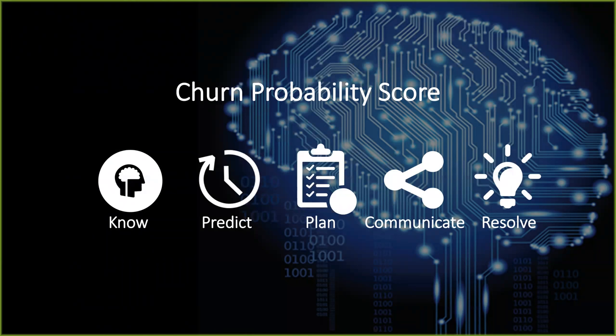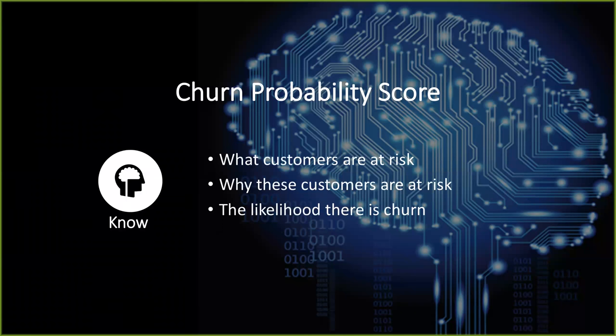The churn probability score has many benefits. The top five I chose to highlight are: the ability to know more about what's happening in your customer base; the ability to predict what's going to happen in terms of recurring revenue; the ability to plan to save the right revenue; the ability to communicate both internally and externally; and then to actually resolve as much churn as you can. Starting with what you get to know: first, you understand which customers are at risk, and what part of what they purchased is at risk, especially if you sell multiple products. At scale, having visibility to this in an easy-to-consume way for multiple stakeholders is really important.